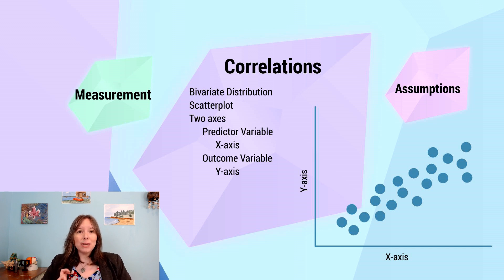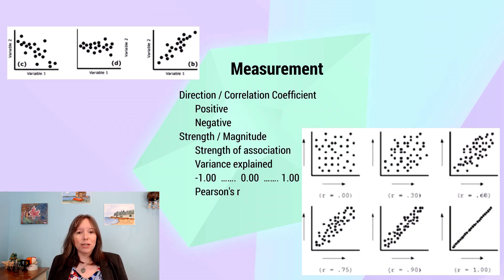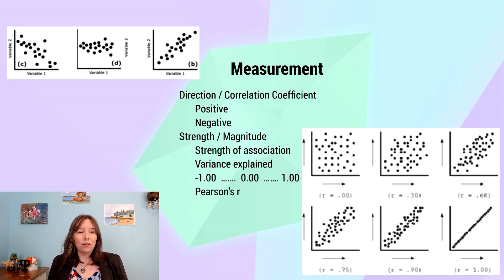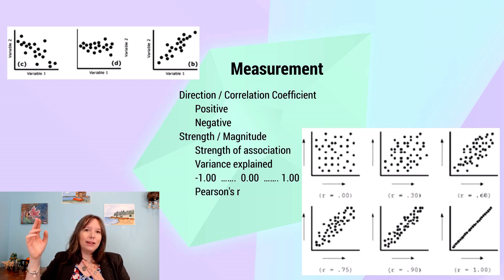In correlations, we start to understand that there are two distributions that seem linked. When we go to measure correlations, there are two types of measurements we're interested in: direction and strength. For direction, we're interested in positive and negative, as well as a lack of correlation. In a positive correlation, as x increases, y increases — going from the lower left corner to the upper right corner in a diagonal.